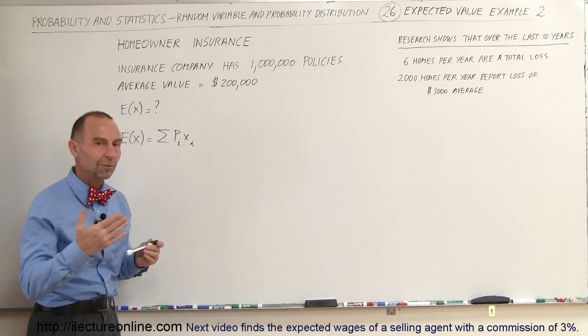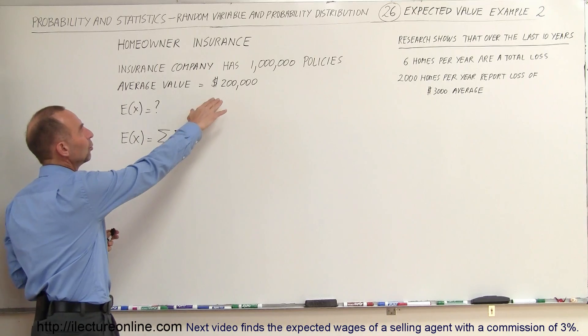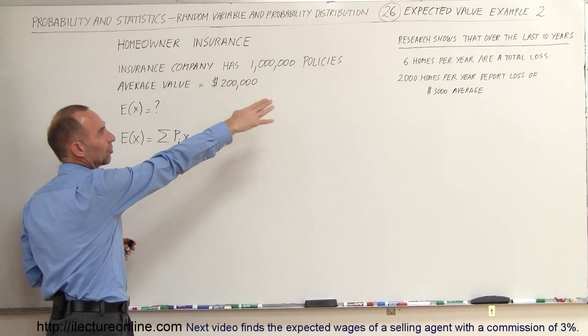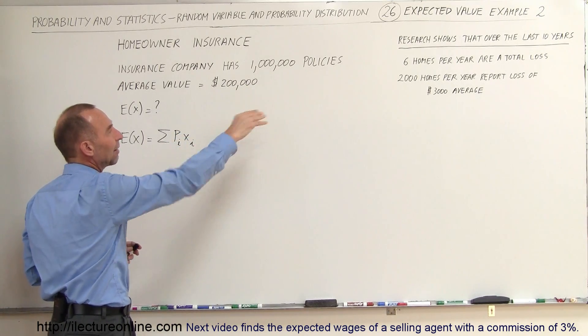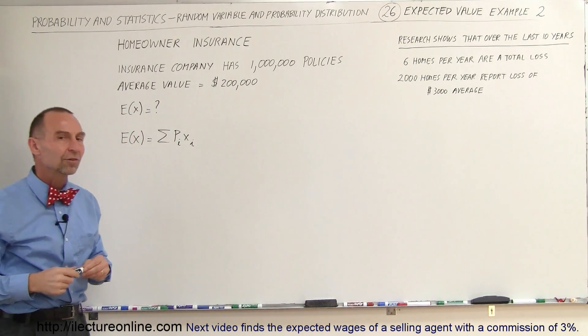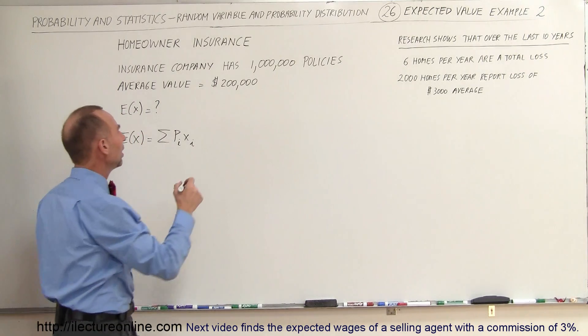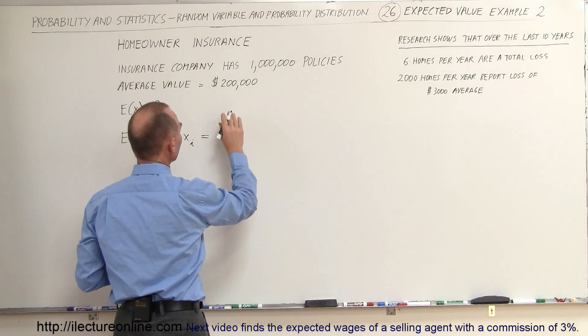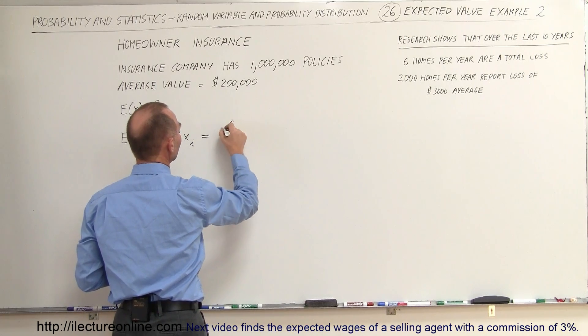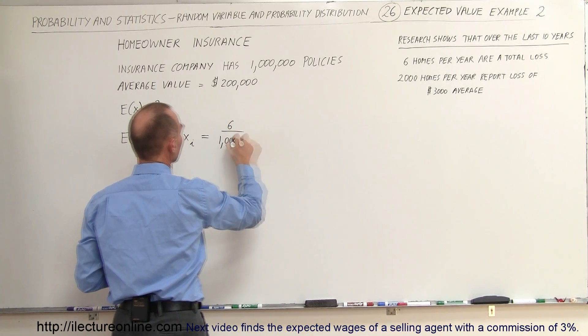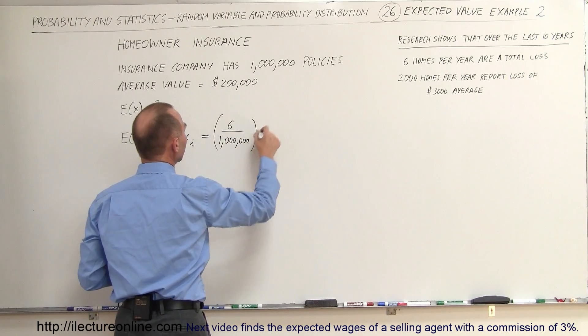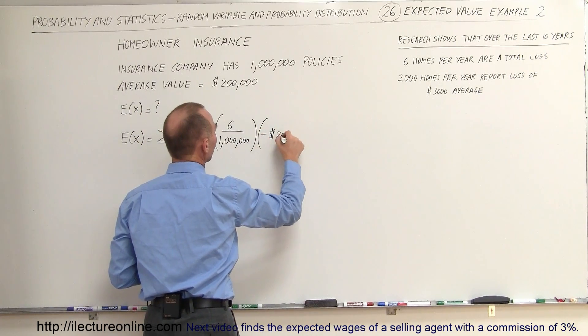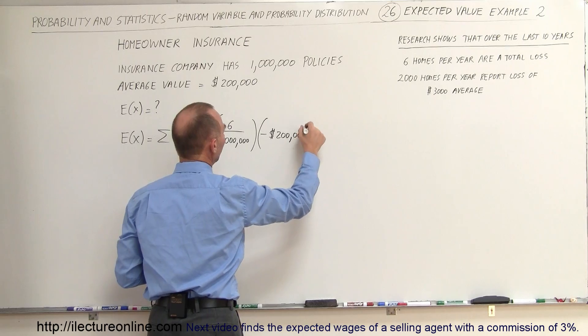In this case we have two things that they would have to pay out. They would have to do the replacement value of the home for six out of a million and then they would have to pay damages for 2,000 out of a million. So in this case the probability would be 6 out of 1 million, and the expense would be minus $200,000 to the insurance company to replace the home.